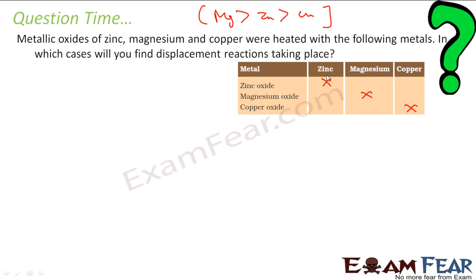Magnesium oxide will not react with magnesium and copper oxide will not react with copper. This we can directly cut. Now when we talk about zinc, will zinc displace magnesium oxide? No. Why? Because zinc is weaker than magnesium. Will zinc displace copper? Yes. So it will displace copper from copper oxide.